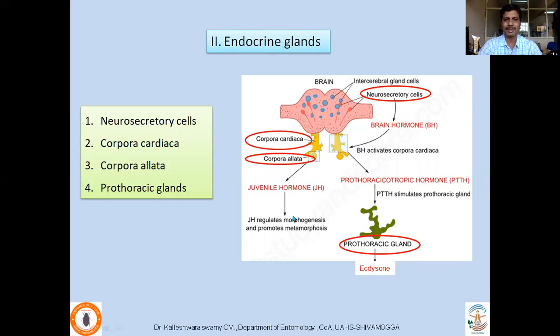Juvenile hormone regulates morphogenesis and promotes metamorphosis. The main function of juvenile hormone is to maintain juvenility or youngness of the insect, and this is because of juvenile hormone secreted by the corpora allata.